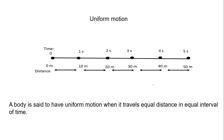Uniform motion: the distance traveled by the object with time is shown in the figure. If we observe, we find that in equal interval of time — the interval of time is one second — the distance traveled by the object is also equal. In the first interval it is covering 10 meters, second 10 meters, third 10 meters, fourth 10 meters, and the last also 10 meters.